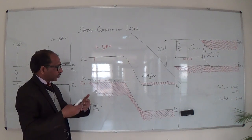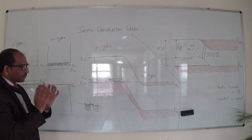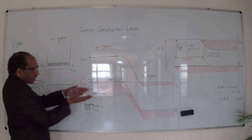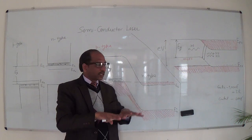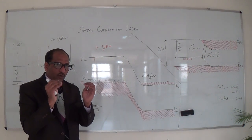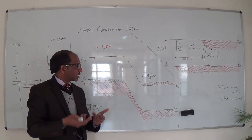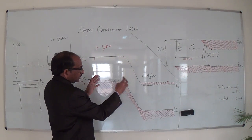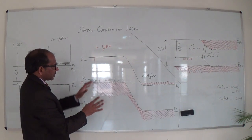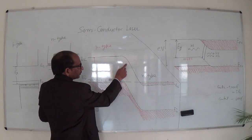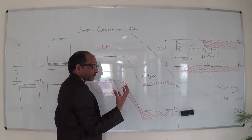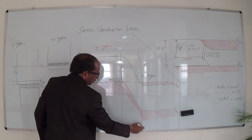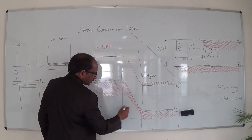When we join the PN junction, the Fermi energy level — which had a gap — becomes horizontal and equal at equilibrium. This condition is reached when the flow of electrons stops without any external biasing. This slope in the energy band diagram represents the internal potential barrier, and the width of this region — from one side to the other — is known as the depletion region.